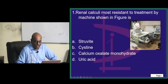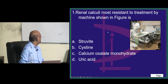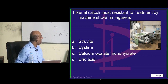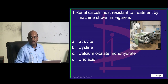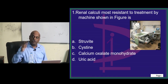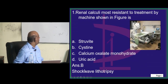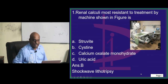Argha Saha, Isa, and Ahmadwani are all proposing option B. So what is this machine? This is extracorporeal lithotripsy. Of all the stones, it is cysteine stones which are highly resistant — that is what you need to remember.